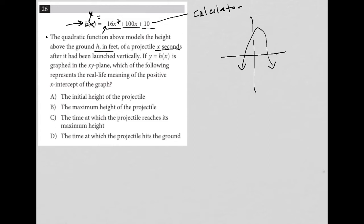It does seem like there's going to be one negative x-intercept and one positive x-intercept. So what I want to think about is, what is this? The question is saying which of the following represents the real life meaning of the positive x-intercept. But what does this mean? What does that x-intercept mean for this function?